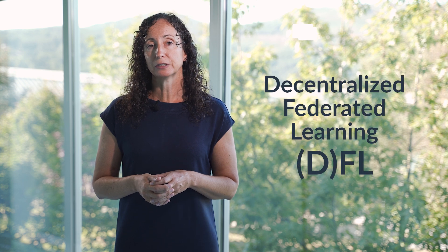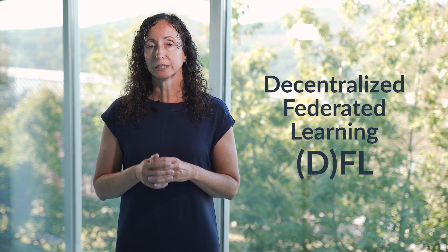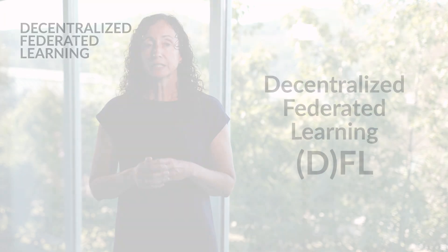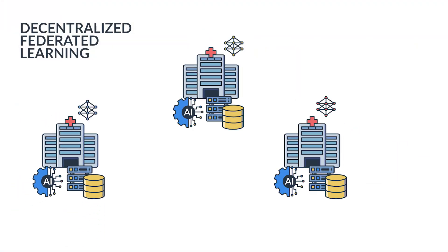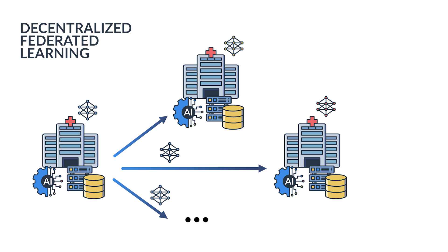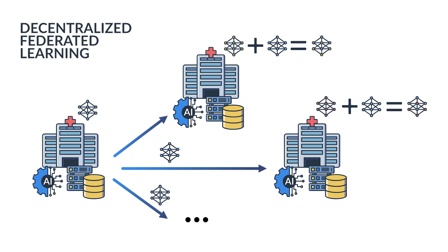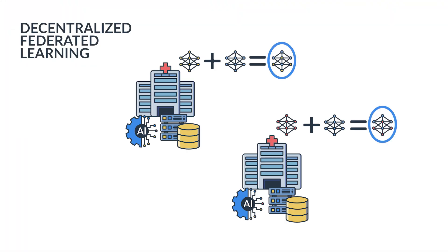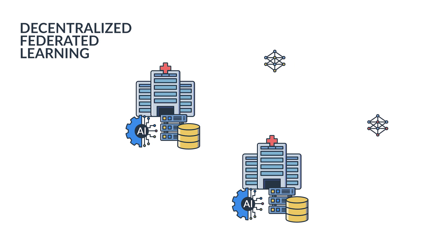One step further is decentralized federated learning, where the central computation element is not needed. In this decentralized federated learning scheme, the devices in the network share their local model with their neighbors, and they are also in charge of combining the different local models into a new one. In this case, not all the computation devices are working with the same global model. Instead, each one has its own global model, which is the result of the information it has received.